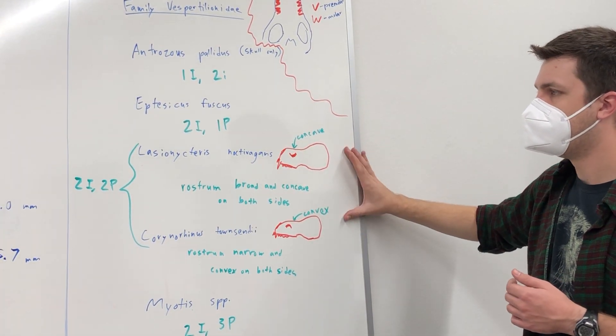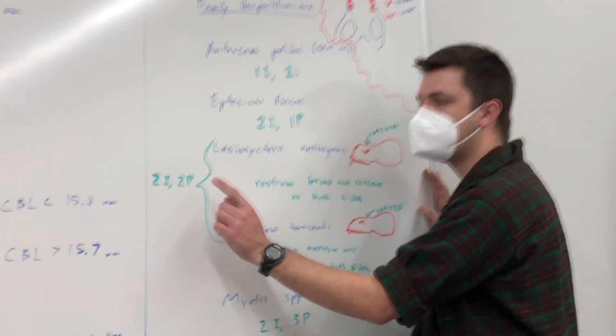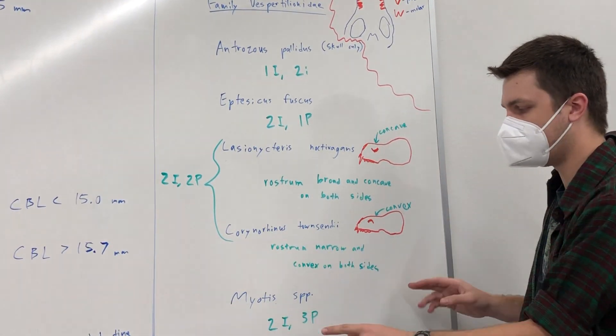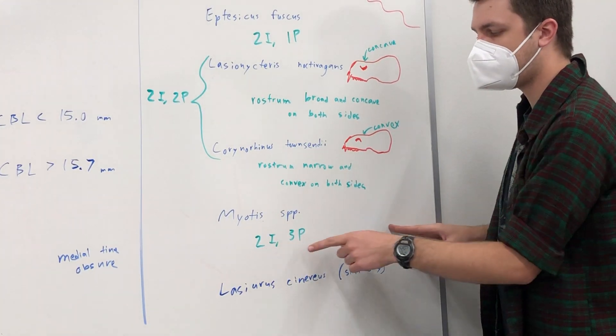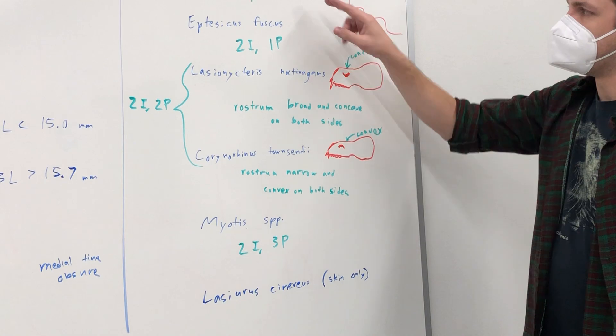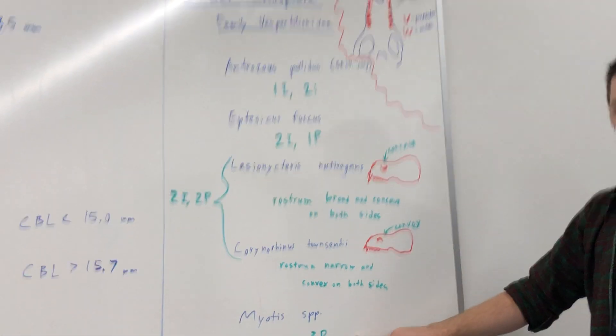Compared to these two, which have two upper incisors and two upper premolars. And compared to this one, that has two upper incisors and three premolars. So one premolar, two premolars, three premolars.